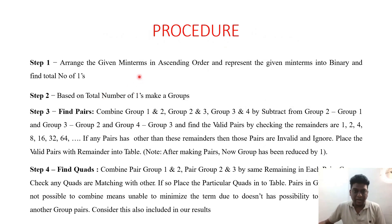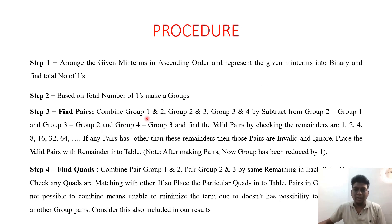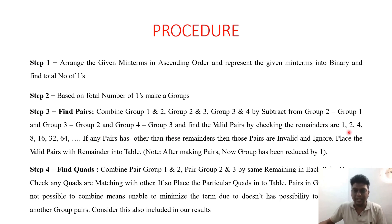This method carries several steps. First, the given minterms are represented in ascending order. Then, based on the total number of ones, we form groups. After forming the groups, we find the pairs by combining group one and two, group two and three, group three and four, and so on. We find valid pairs by checking that the remainders are powers of two: 1, 2, 4, 8, 16, 32, etc. — that is, 2 to the power n, where n varies from 0 upward.